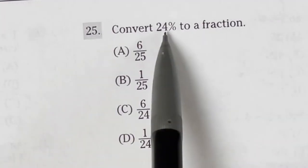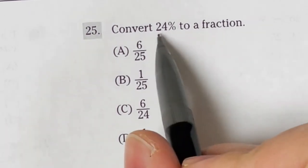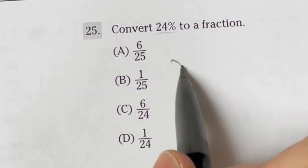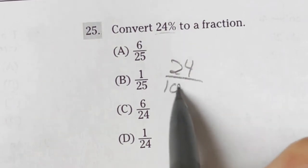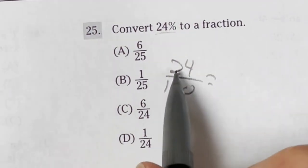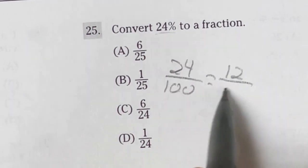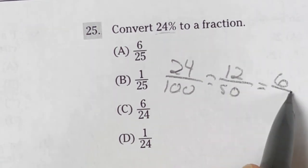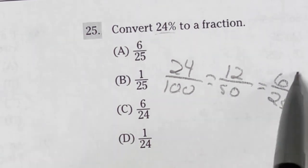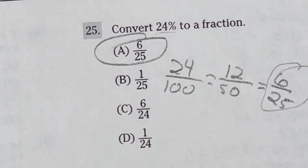Number 25 on the ASVAB says, convert 24% to a fraction. So the easiest way to go about converting percents to fractions is you just put that number over 100. Since we don't have a calculator, I'm just going to go ahead and keep cutting this in half to get it down. That means cutting 24 in half is going to give me 12. 100 in half is going to be 50. Cut those both in half. 12 in half is 6, and 50 in half is 25. That means that our final answer, because these can't be cut down anymore, is going to be 6 over 25, which is option A.